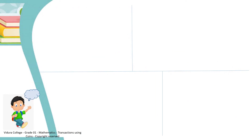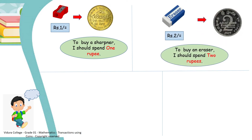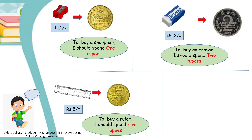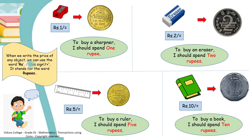Children, Peter says: to buy a sharpener, I should spend 1 rupee. To buy an eraser, I should spend 2 rupees. To buy a ruler, I should spend 5 rupees. And to buy a book, I should spend 10 rupees. Children, when we write the price of any object, we can use the word rupees — that means Rs. — and this sign, which stands for the word rupees.